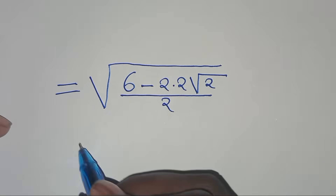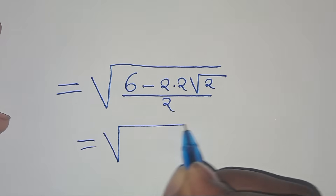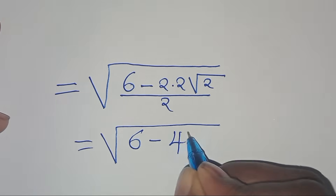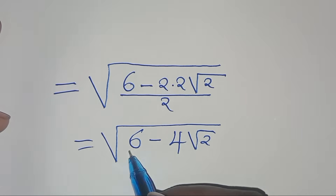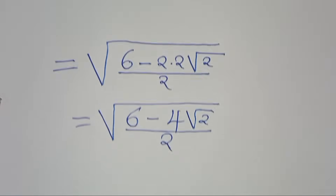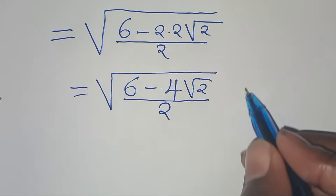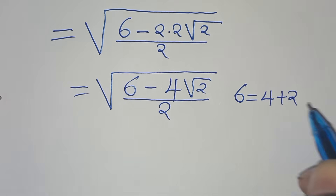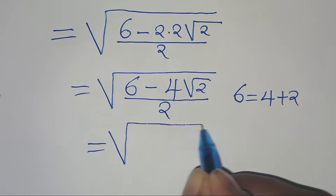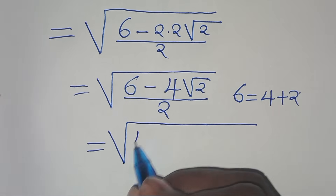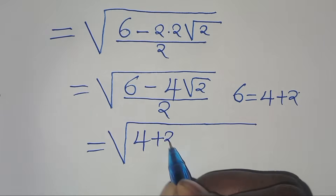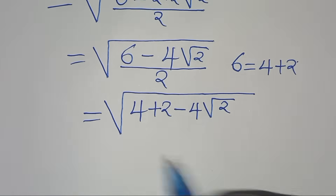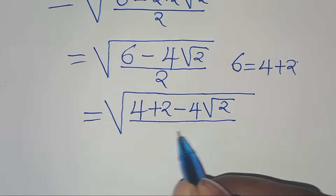This implies that here we have the square root of 6 subtract 2 times 2, this is 4, square root of 2, everything divided by 2. So we can express 6, this is the same thing as 4 plus 2. Therefore we have the square root of 4 plus 2, minus 4 square root of 2, everything divided by 2.